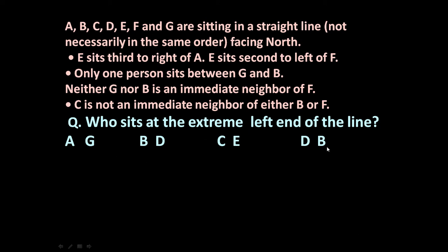The options are G, D, E, or B. Only one question is given here, but in the actual examination generally 3, 4 or 5 questions are asked on this given information. So first let us learn how to analyse the given information.